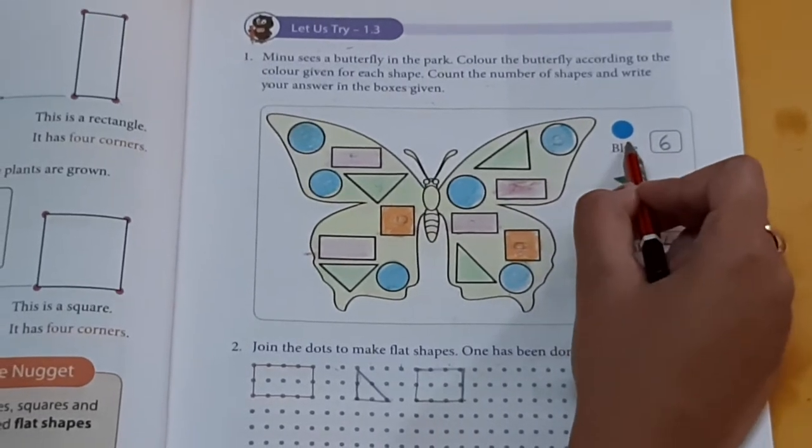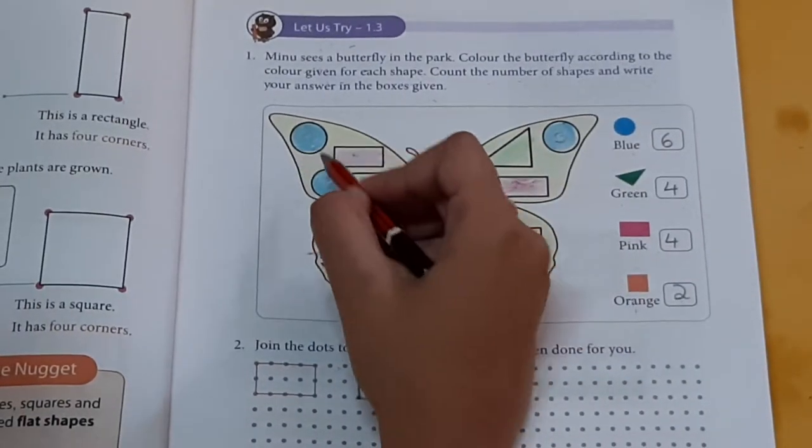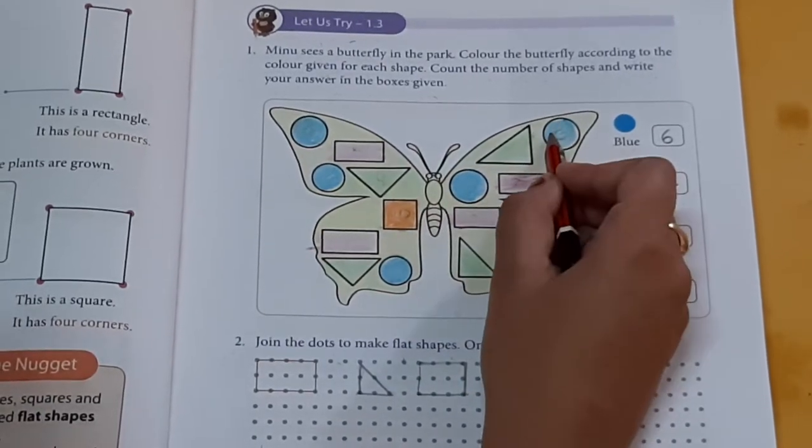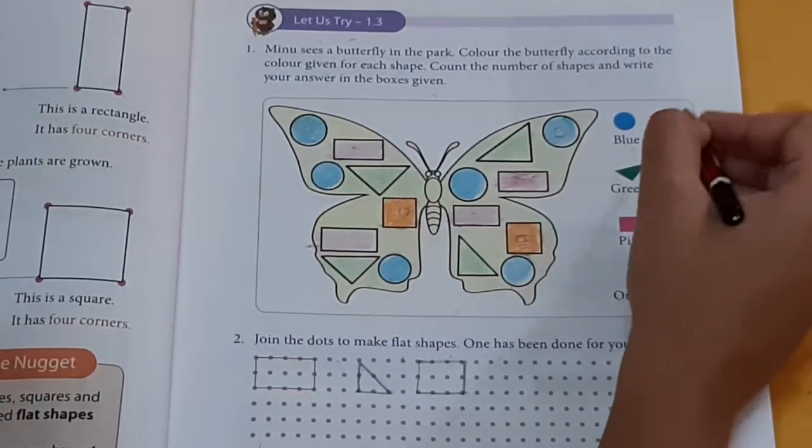Circle. One, two, three, four, five, six. Six.